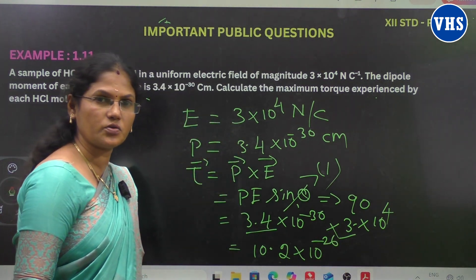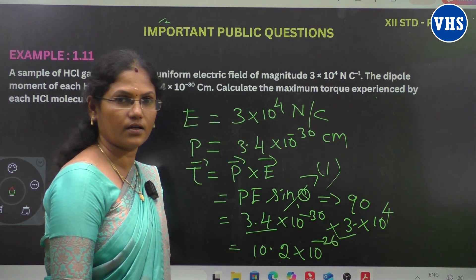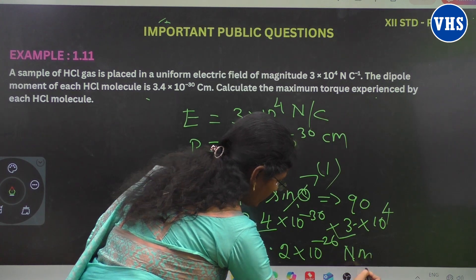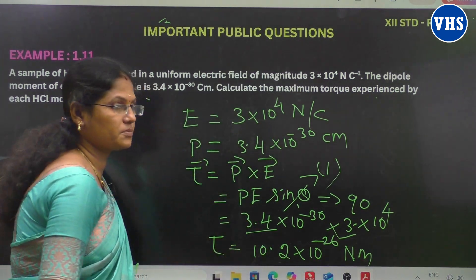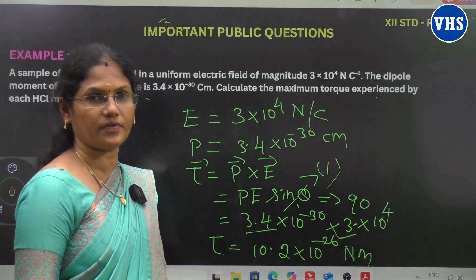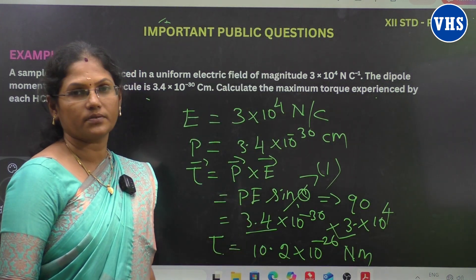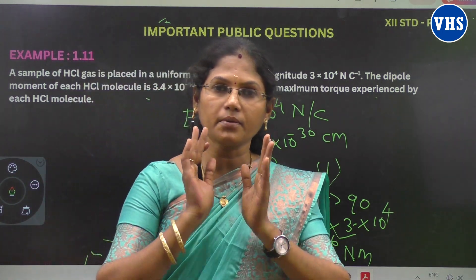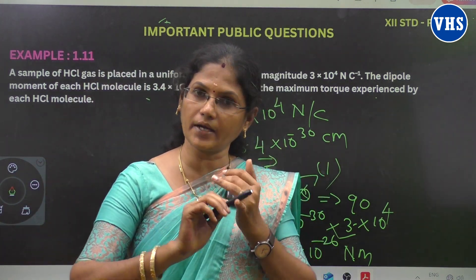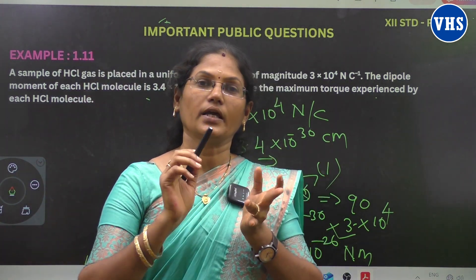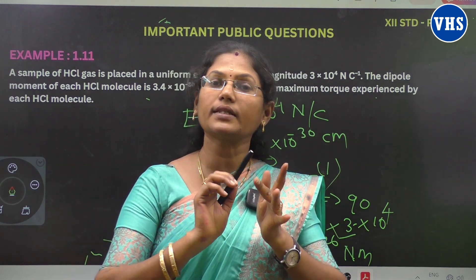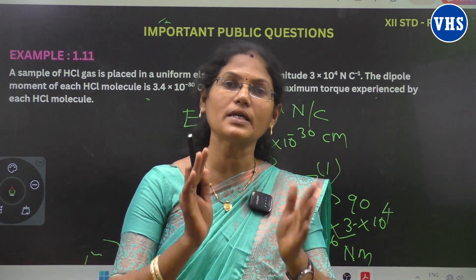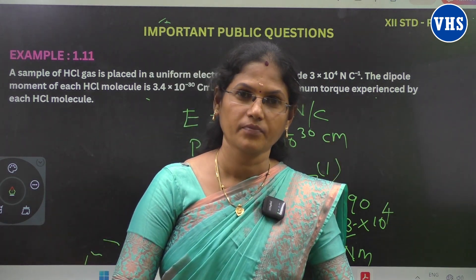The SI unit of torque is Newton meter. So the maximum torque is 10.2 × 10⁻²⁶ Newton meter. That is the answer. Before we solve any problem, we identify what we need to find, what formulas to use, and what the given data are. If we follow this method, the problem is easier to solve. Clear?